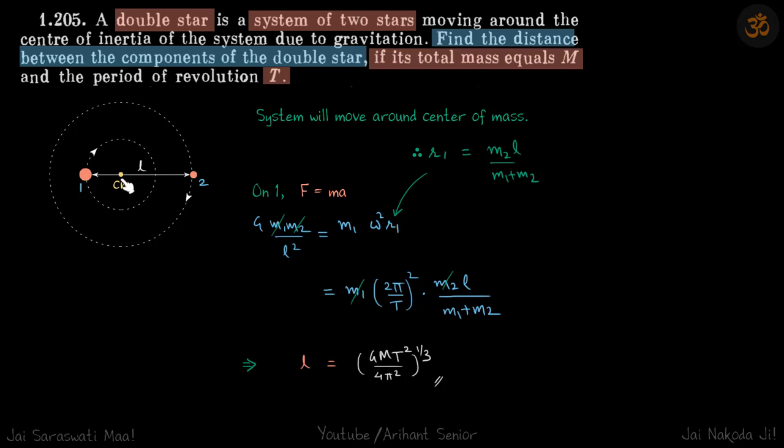Now for center of mass: R1 is the distance of the first particle from the center of mass, which we know is M2L upon M1 plus M2.